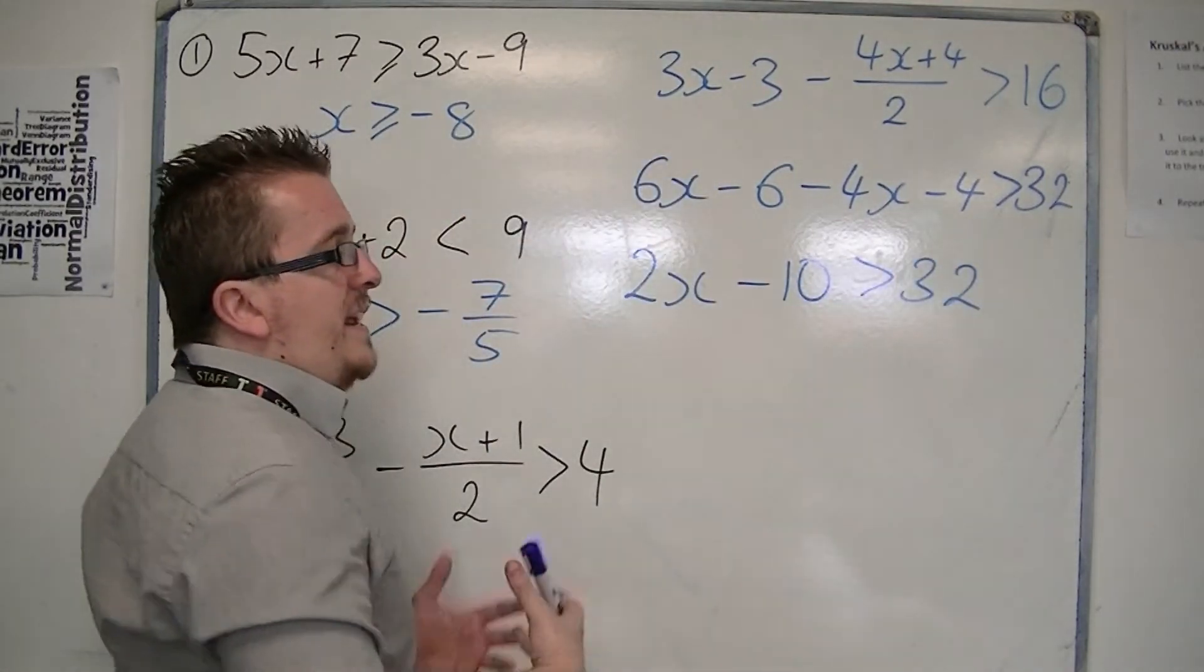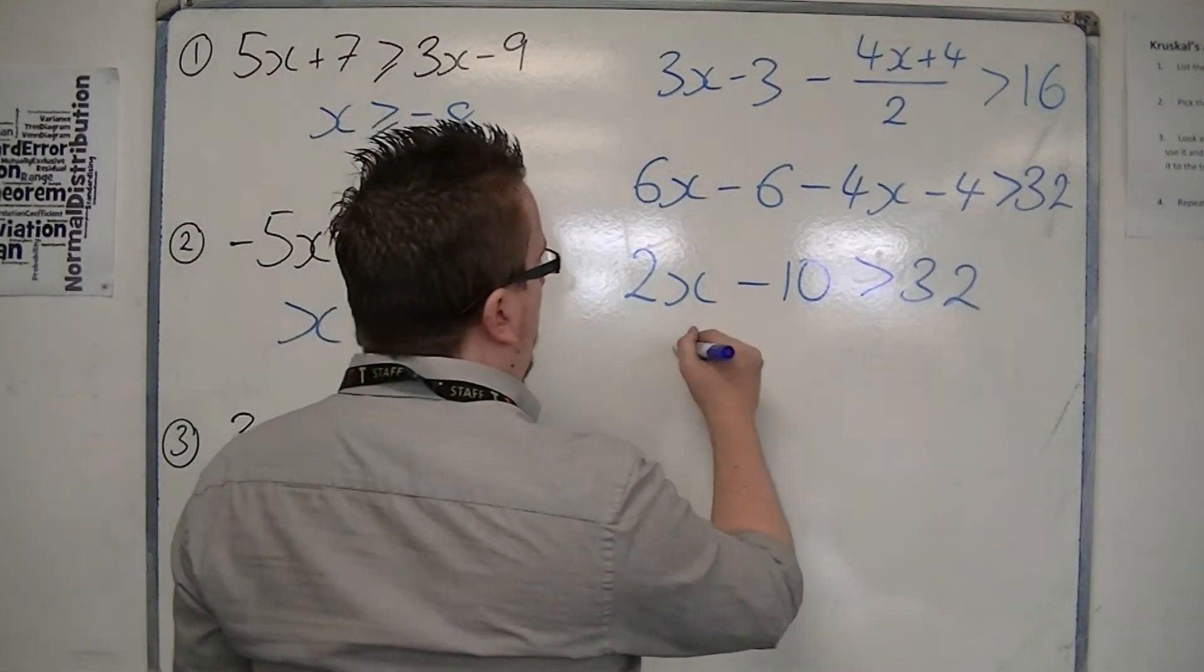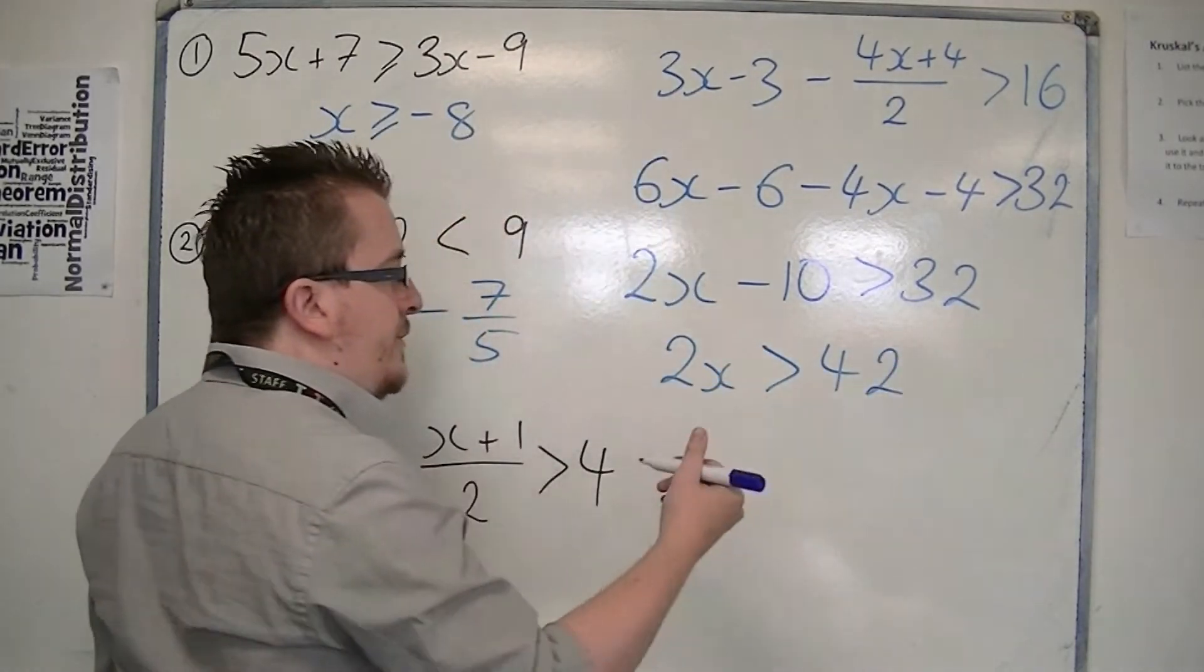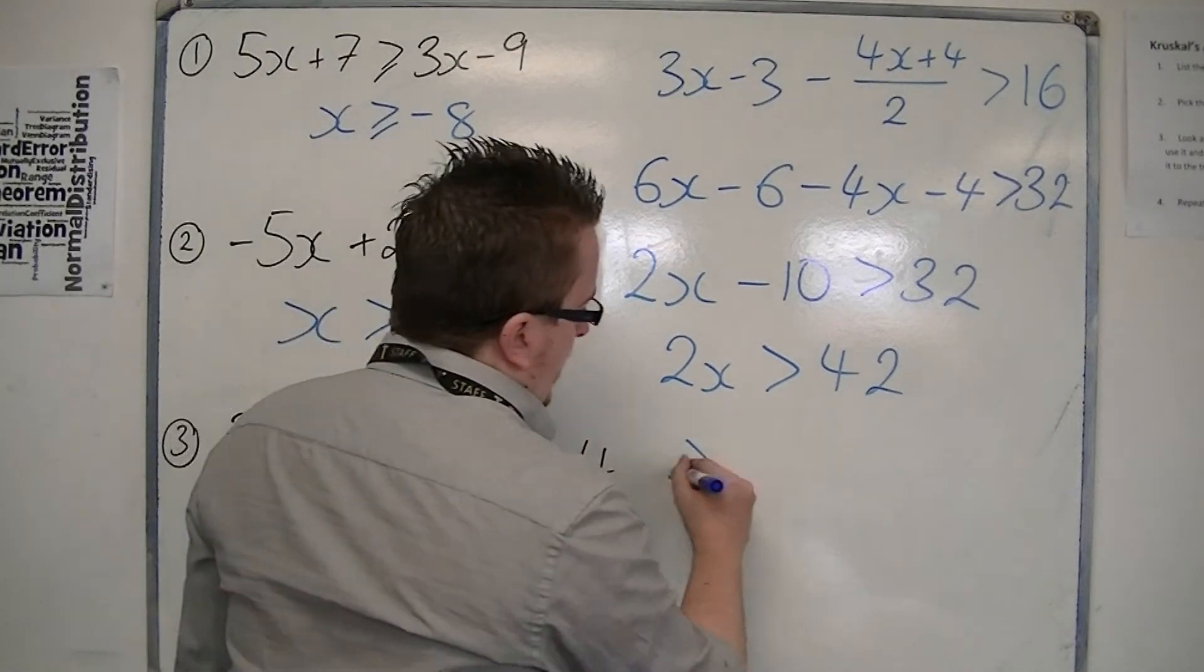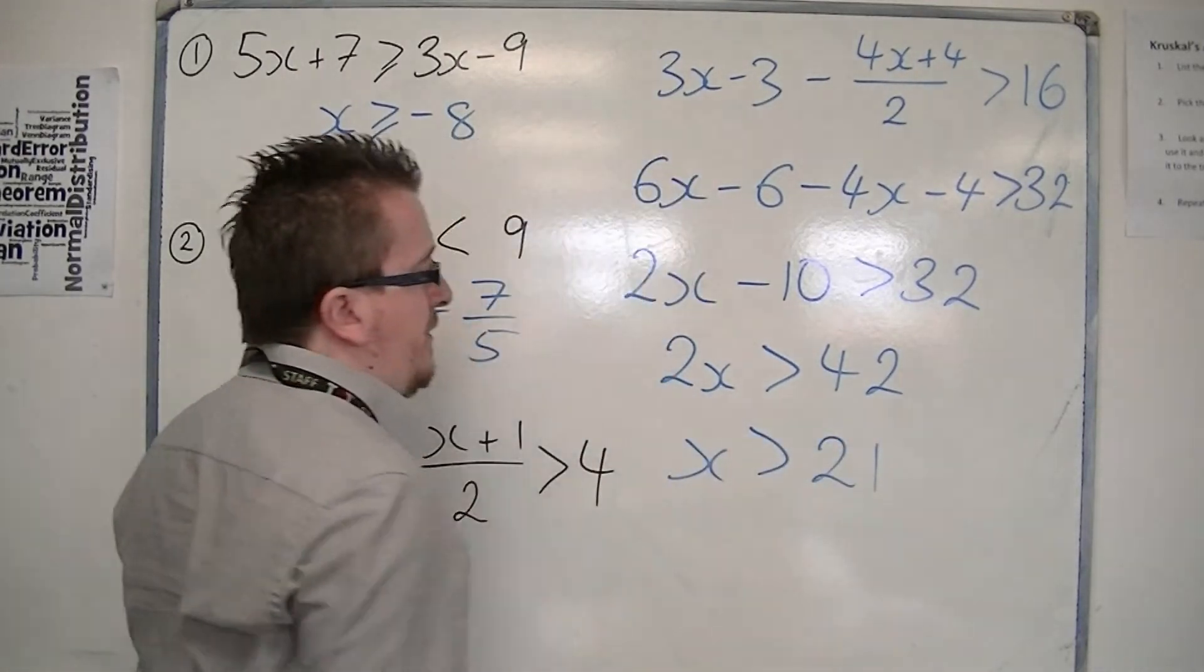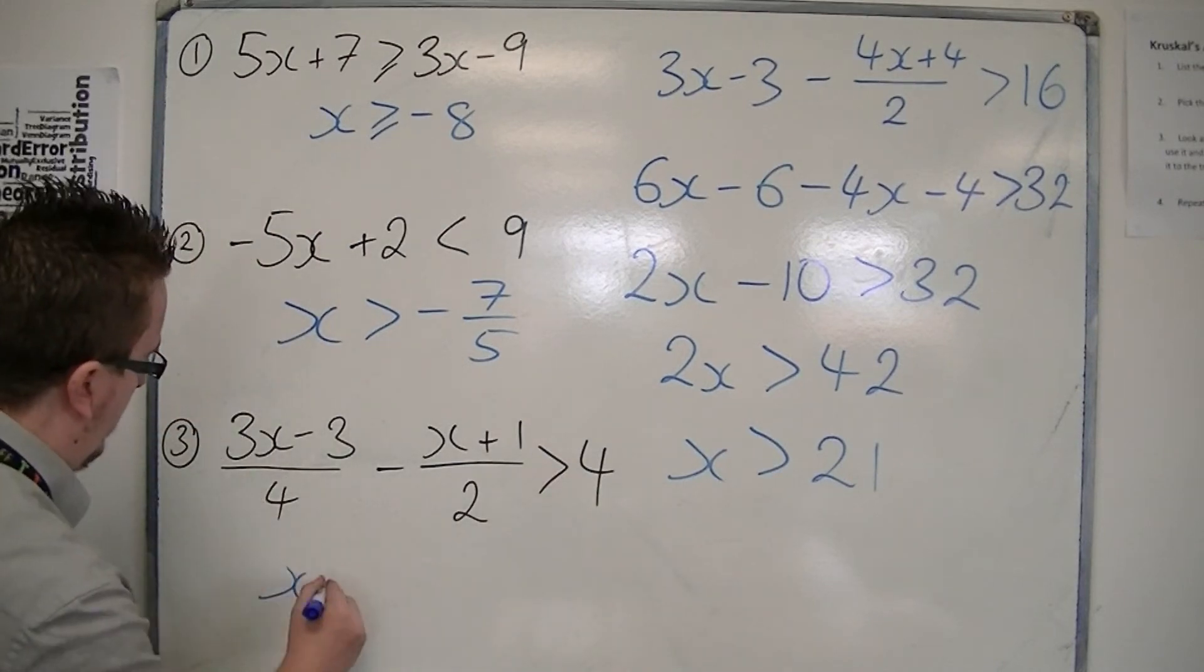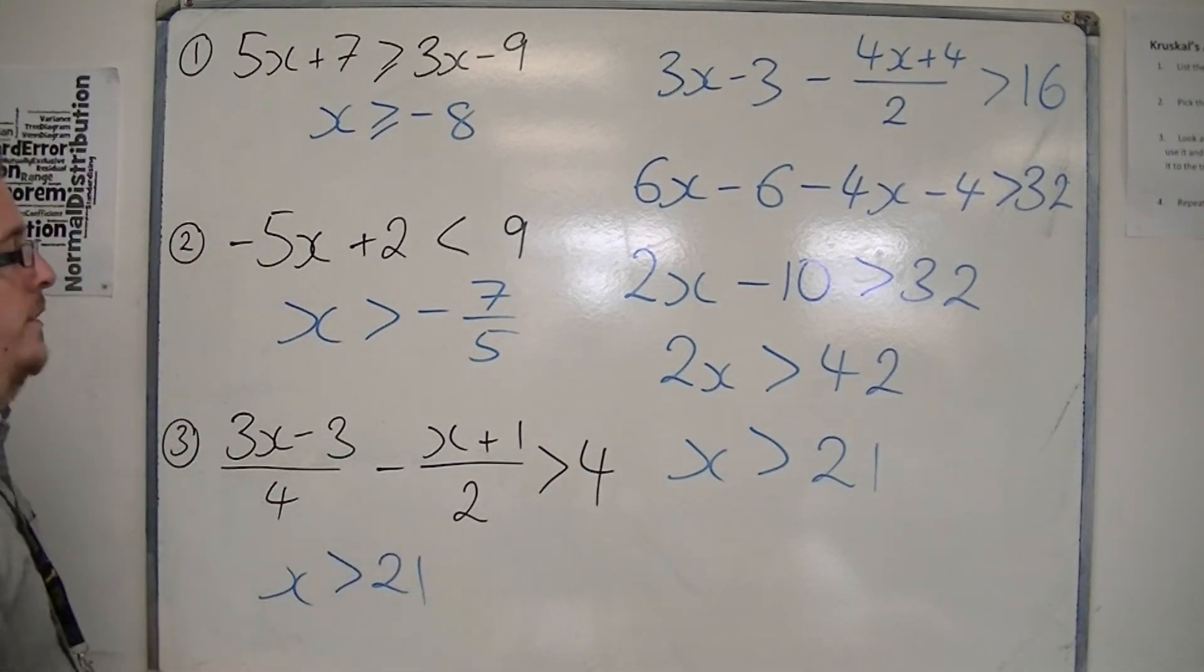Add 10 to both sides, so 2x is greater than 42. Then divide both sides by 2. Dividing by a positive number doesn't change the symbol, so x is greater than 21.